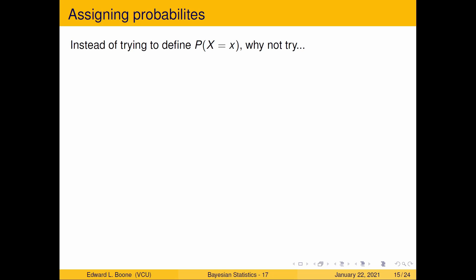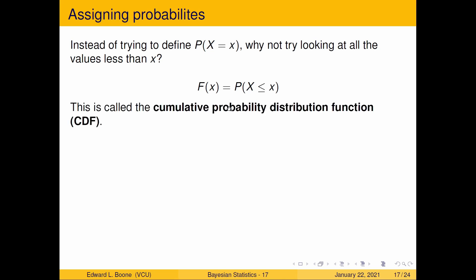Instead of looking at the probability x equals little x, why don't we look at the values less than x? That's something we can count. We can say, is it bigger than this or less than that? It's less than that, so it gets counted. That's easy to handle. This is what's called a cumulative probability distribution. We'll call this a CDF. If I keep saying CDF, this is what I'm referring to.